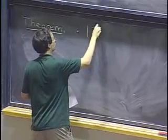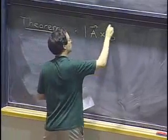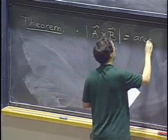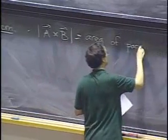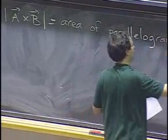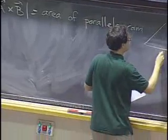The length of a cross product is the area of the parallelogram in space formed by the vectors a and b.